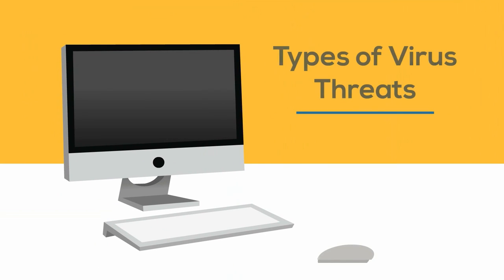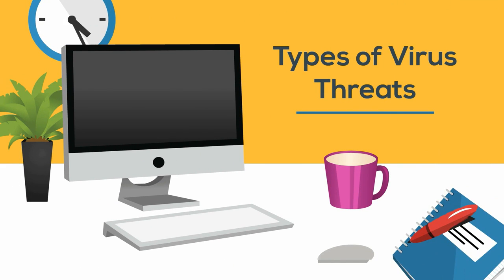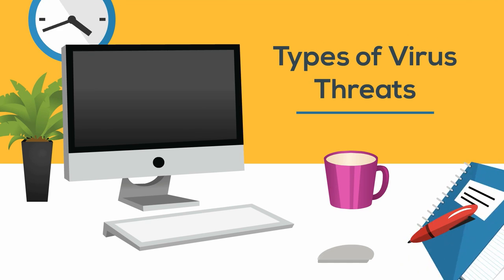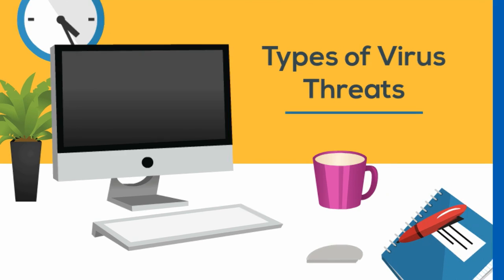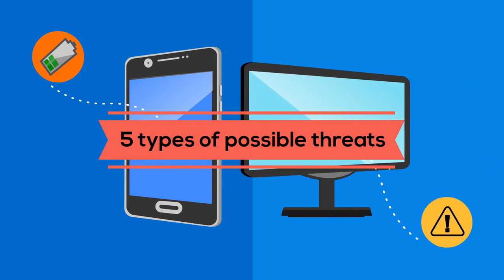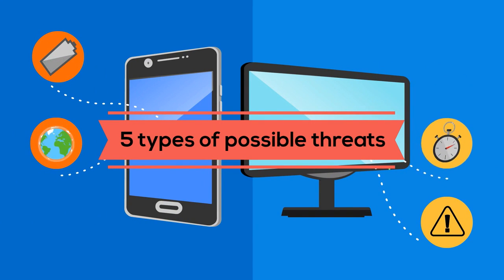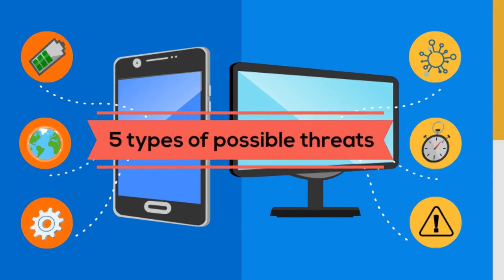Hello. The great big ocean of the web contains many predators and threats. If we can identify them, we can protect ourselves from possible dangers. These are five types of possible threats that may occur at any time using the internet.